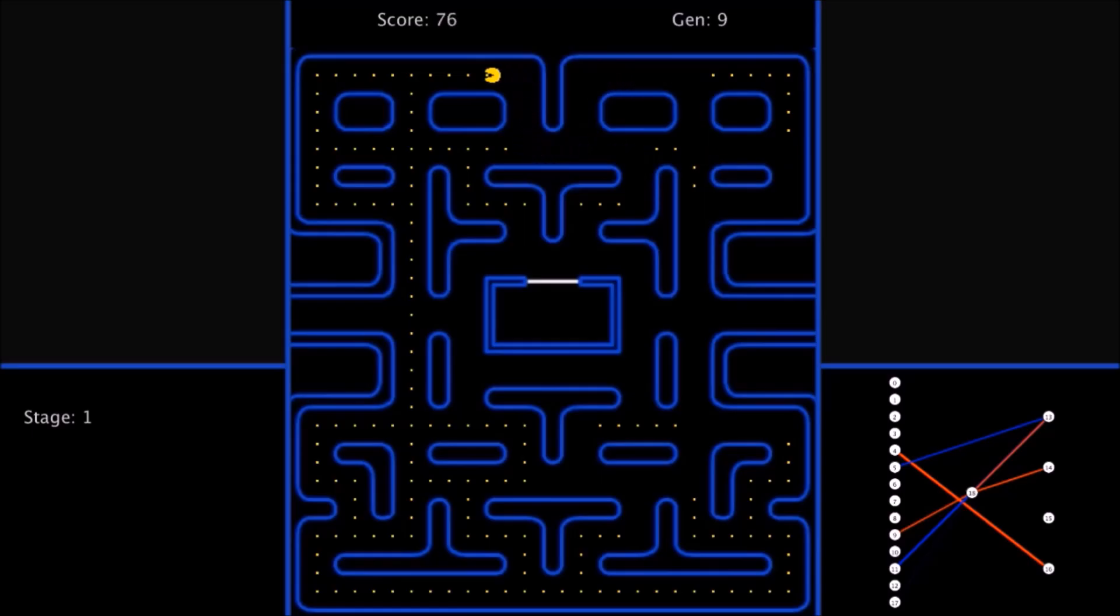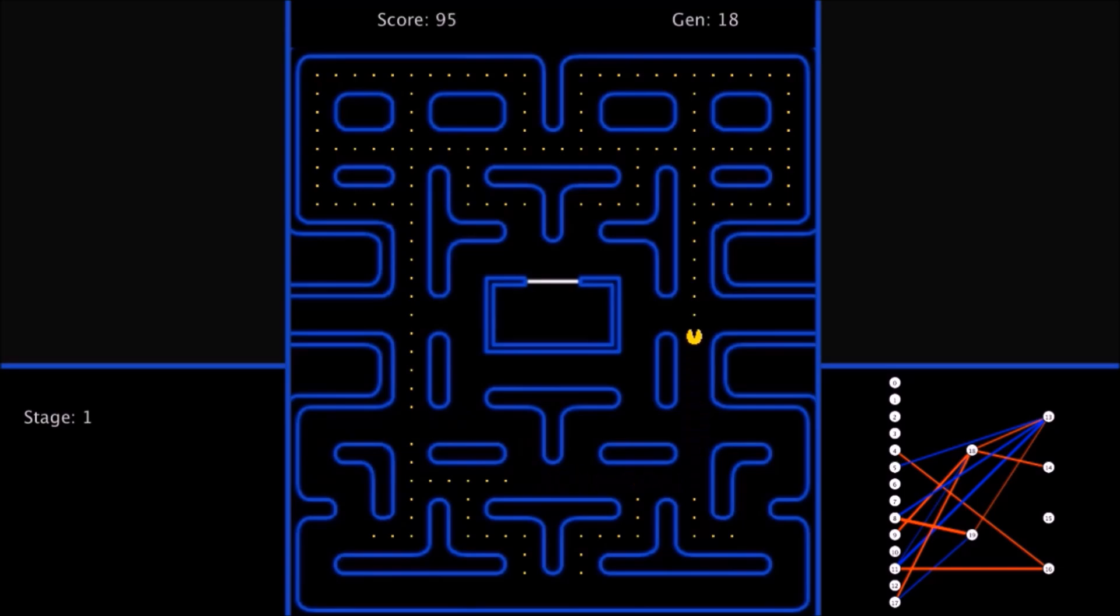Instead of the controls turning Pac-Man in an absolute direction like north, south, east, or west like they normally are, I had to change it so it's relative to Pac-Man, so for example, turn left or right. This way they could have simple rules, such as when Pac-Man sees a wall in front of it, it turns left. You can see how complicated the neural network is getting, even though we haven't added any ghosts or any big dots yet.